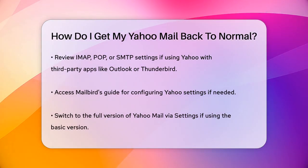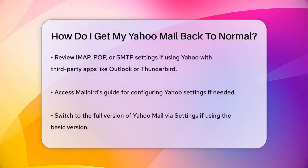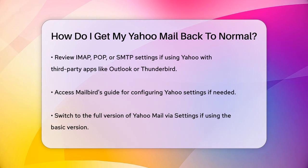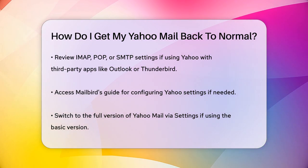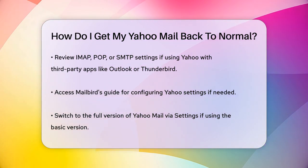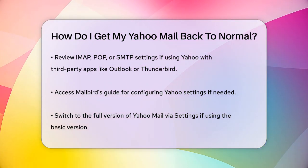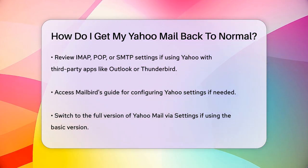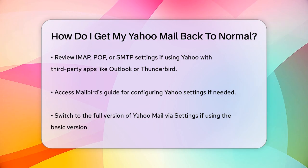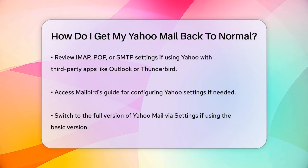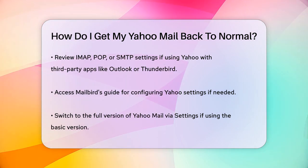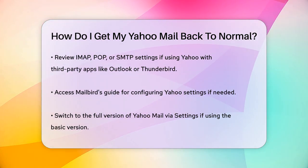If your emails aren't displaying correctly, you might be using the basic version of Yahoo Mail instead of the full version. To switch back to the full version, go to Settings and select Switch to Full Mail on the right-hand side.